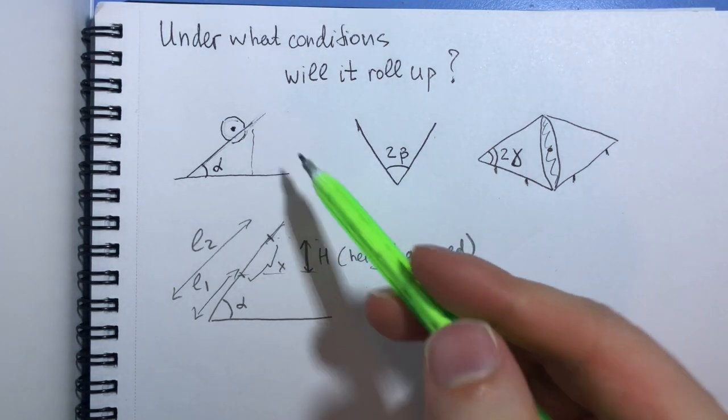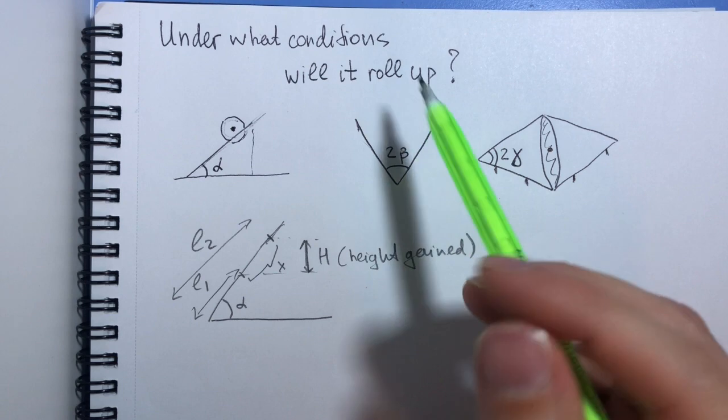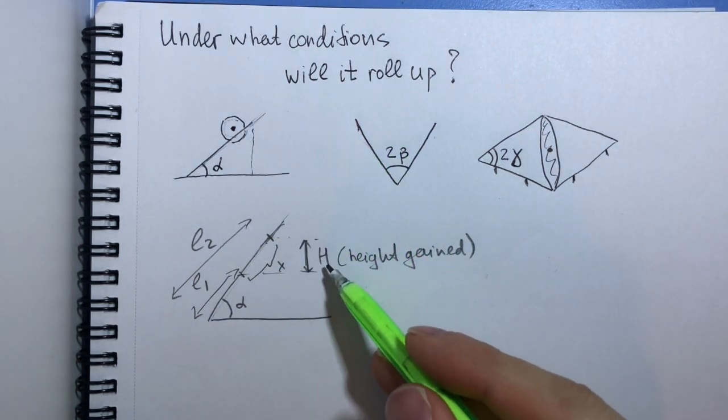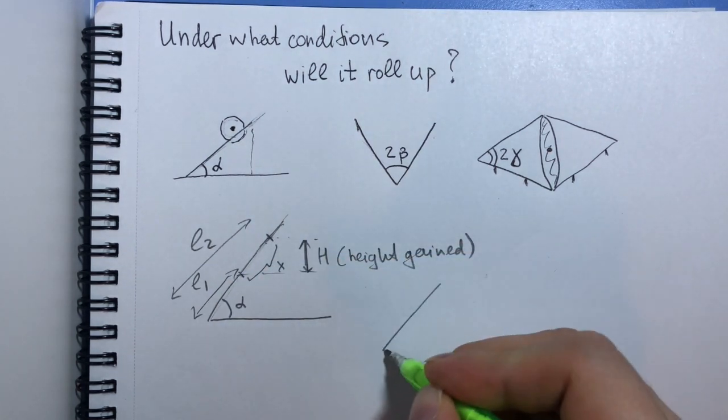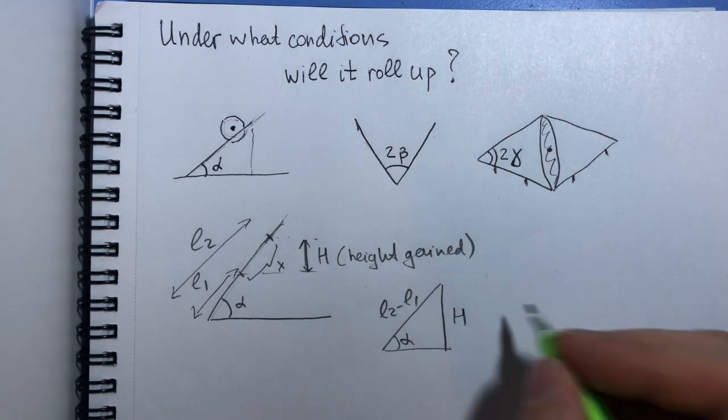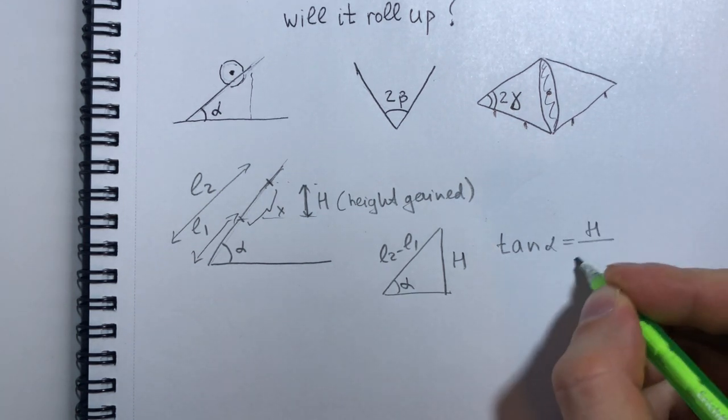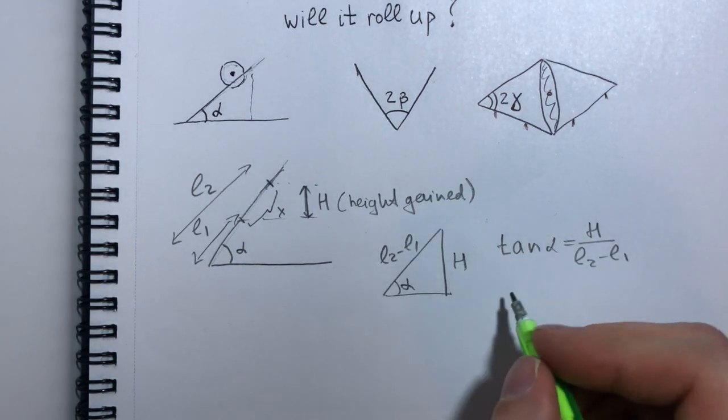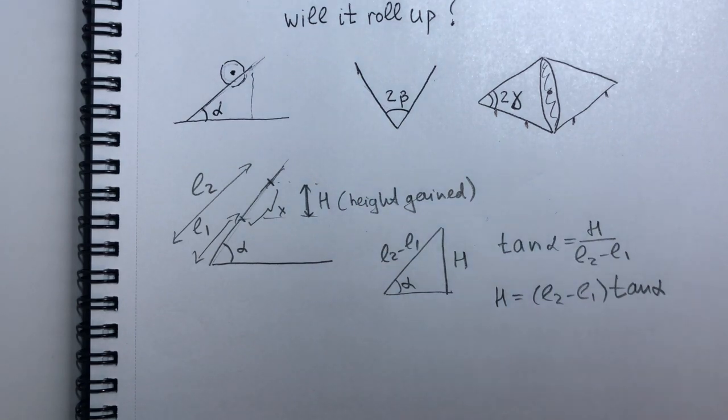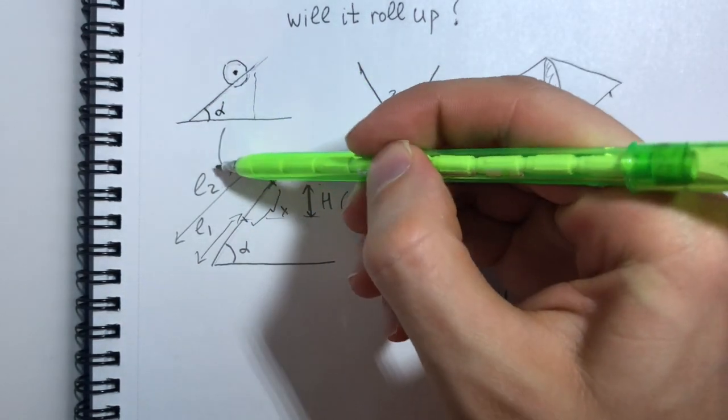But overall we are interested in this gain of height. Let's call this big H. So this is the height gained by the center of gravity of the cone, first assuming that it does not fall with respect to the slope, right? So first, this setup assumes that this slope is just a plane. So finding H is quite easy. We just have a triangle like that. This is H, this is L2 minus L1, and this is alpha. So by trigonometry, we have that tan alpha is H over L2 minus L1, and so H is L2 minus L1 times tangent alpha. So this is how much we gain or lose with respect to this picture.